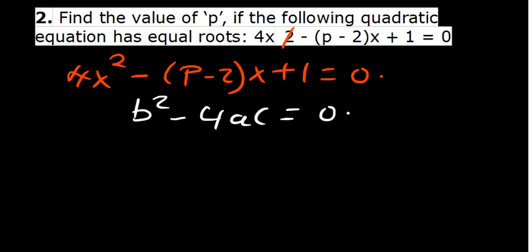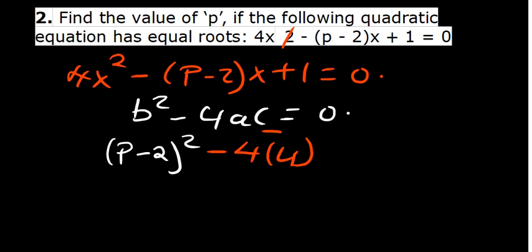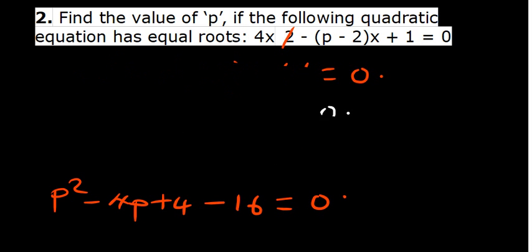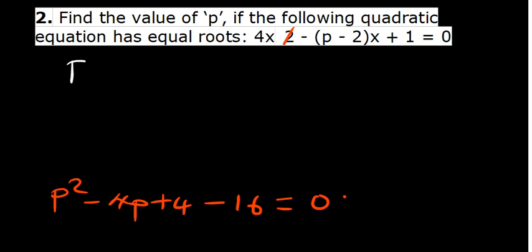So b squared minus 4ac equals 0. Our b is negative (p minus 2), but squaring it gives (p minus 2) squared. Our a is 4 and c is 1. Expanding (p minus 2) squared gives p squared minus 4p plus 4. Then 4 times 4 times 1 is 16. So we have p squared minus 4p plus 4 minus 16 equals 0, which simplifies to p squared minus 4p minus 12 equals 0.